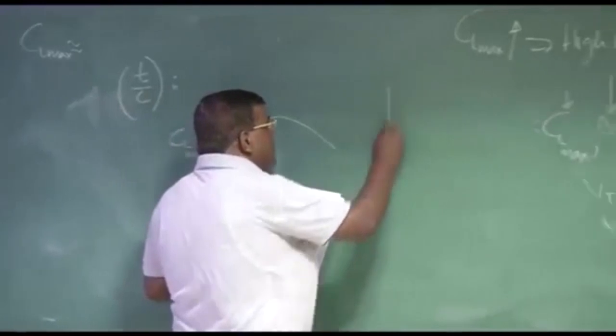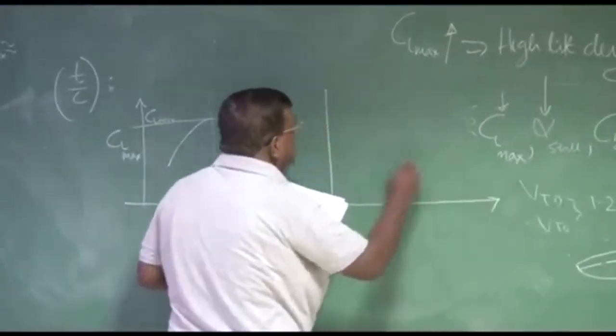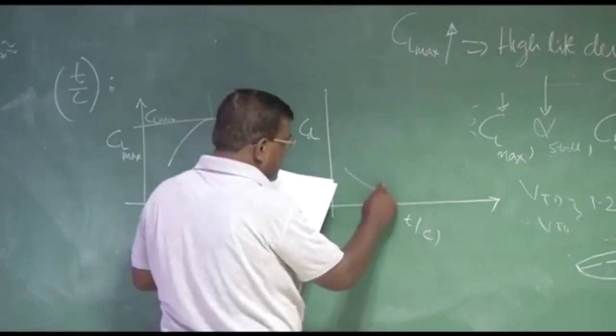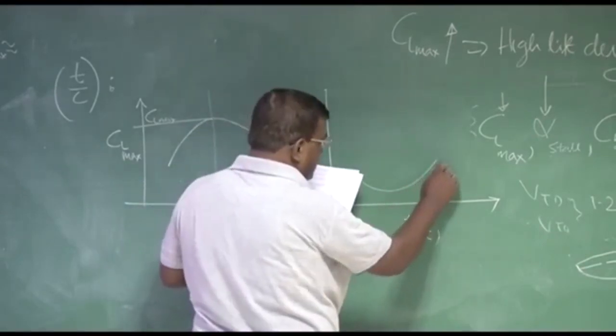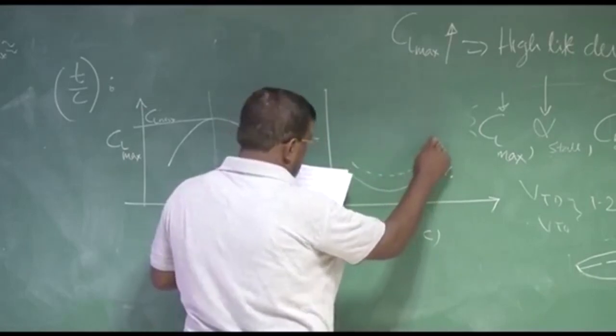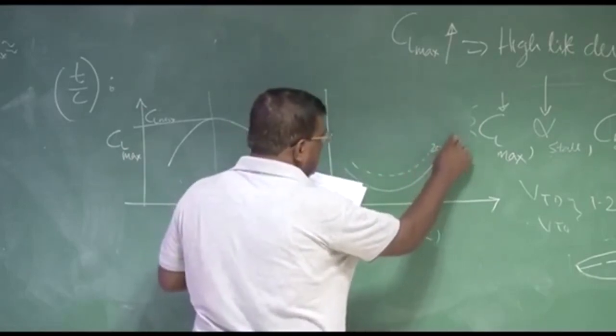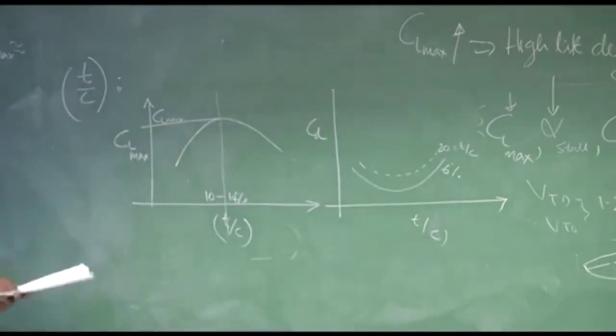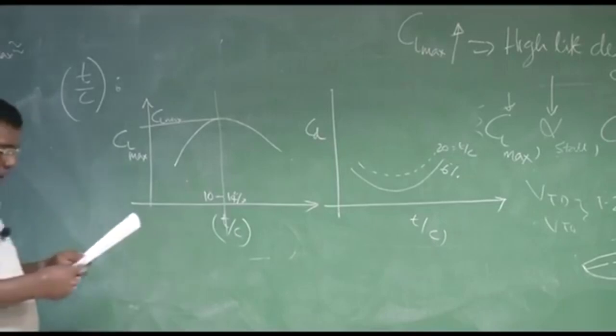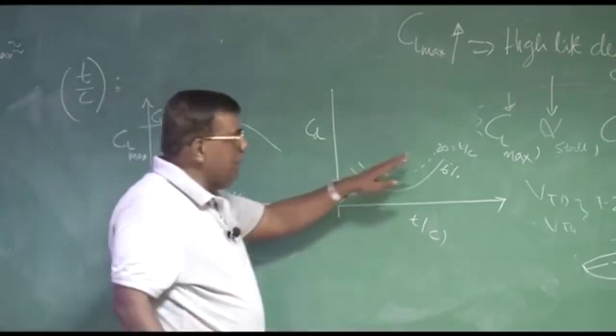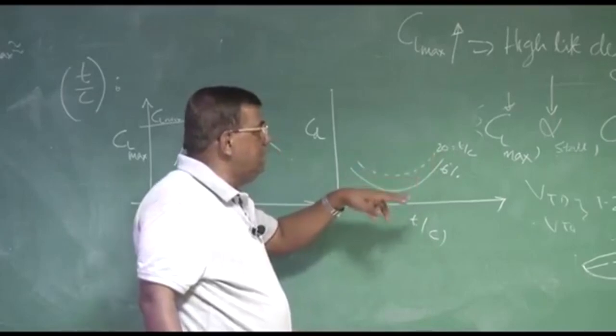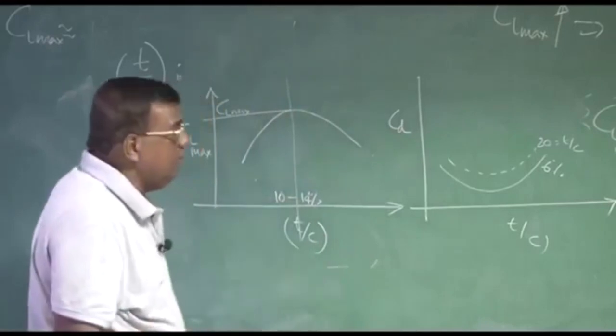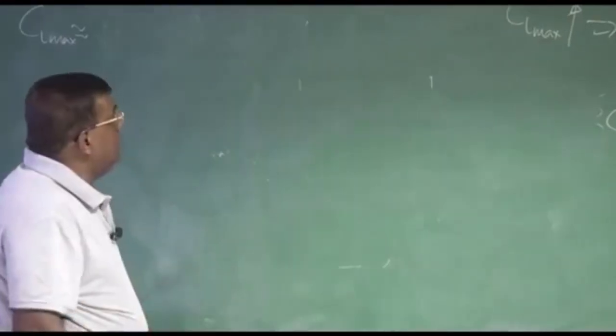So their T by C requirement will be more decided by the Mach number effect. Similarly T by C with drag, as T by C increases, drag also will increase. So let us say this is for 6 percent T by C, you would expect this is for 20 percent T by C. Typically there will be increment based on different type of aerofoil, but you should know that there is going to be a penalty you are paying, as you are increasing the T by C, as far as drag is concerned or CD drag coefficient is concerned.